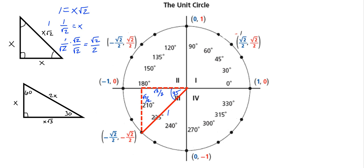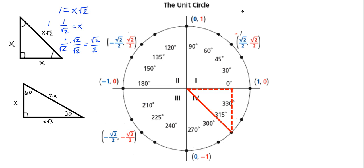In the fourth quadrant, taking the same triangle gives a positive X value and a negative Y value: (√2/2, -√2/2). So far we have all the intercept points and all the 45-degree ratio points — at 45°, 135°, 225°, and 315°.